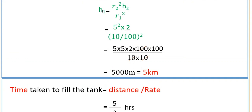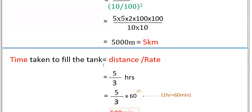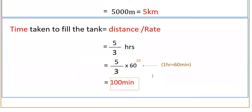So this is the length of water flow in that time. h1 is equal to 5 kilometers. Now finding the time taken to fill the tank: time equals distance by rate. Distance is 5 kilometers, rate is 3 kilometers per hour, so time is 5 by 3 hours. Converting to minutes: 5 by 3 into 60, because 1 hour equals 60 minutes, that gives 100 minutes. Therefore, time taken to fill the tank is 100 minutes.